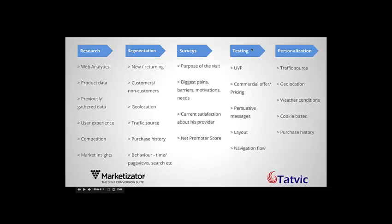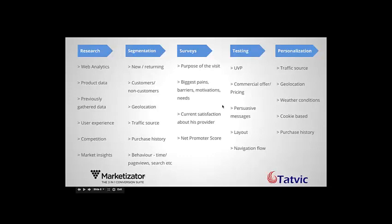After surveying, you go simply to test. You can test things like unique value proposition, commercial offering, or pricing. You can test different persuasive messages, different layouts, navigation flow, and similar elements. At the end, you personalize according to traffic source and geolocation. For example, at Marketisator we offer marketers the ability to segment and personalize based on weather conditions, because weather is affecting conversions. Or you can personalize based on cookies or purchase history. That's a framework you might use if you run out of ideas.